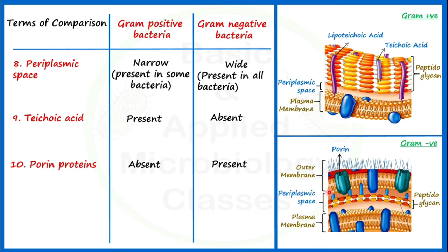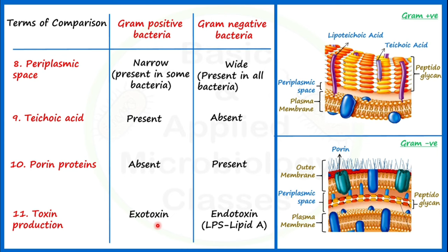Let's see the next point of difference: toxin production. Gram positive bacteria are well known to produce exotoxins, and gram negative bacteria are known to produce endotoxins. Exotoxins are released outside the cell — they are secreted by the cell. Endotoxins are not secreted by the cell because they are actually a part of the bacterial cell. Endotoxin belongs to the outer membrane, which is made up of LPS — lipopolysaccharide. LPS acts as an endotoxin only after lysis of the cell, and Lipid A is the toxic part of LPS which codes for the endotoxin.